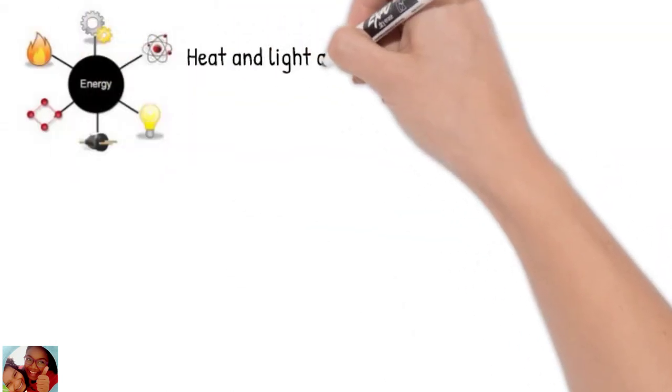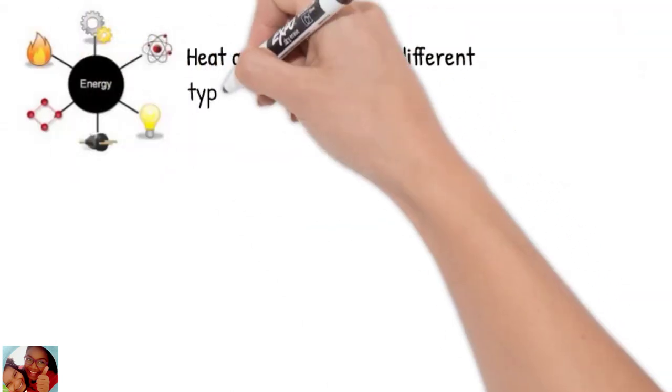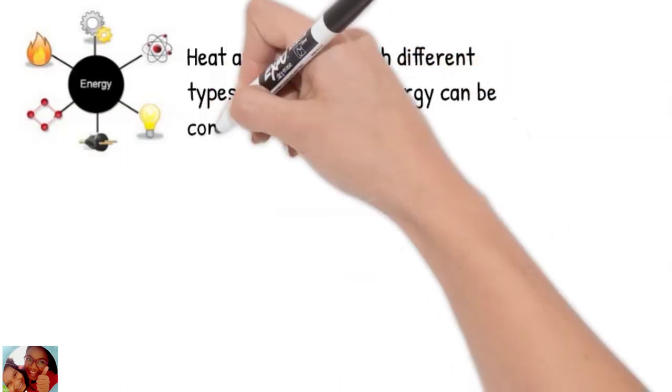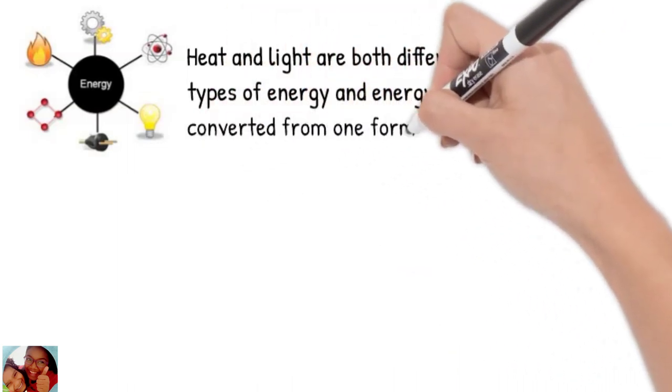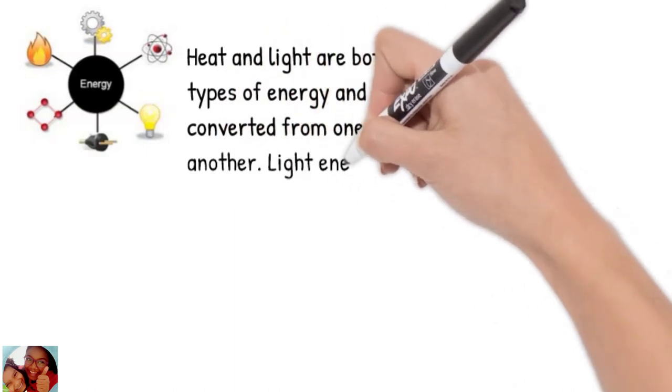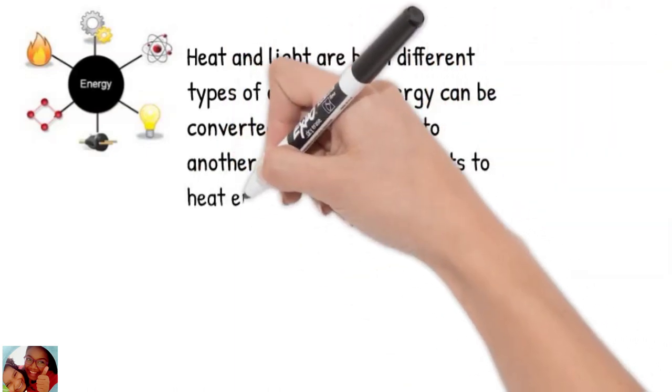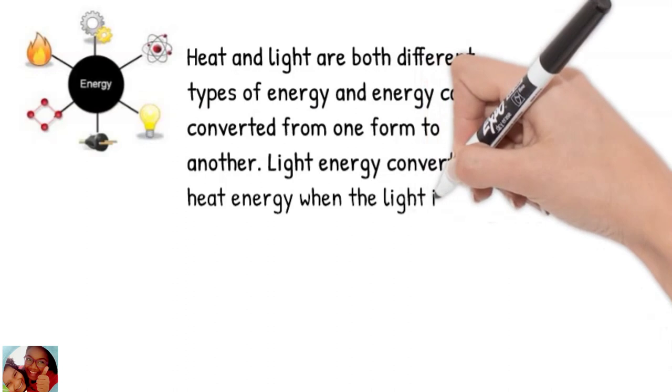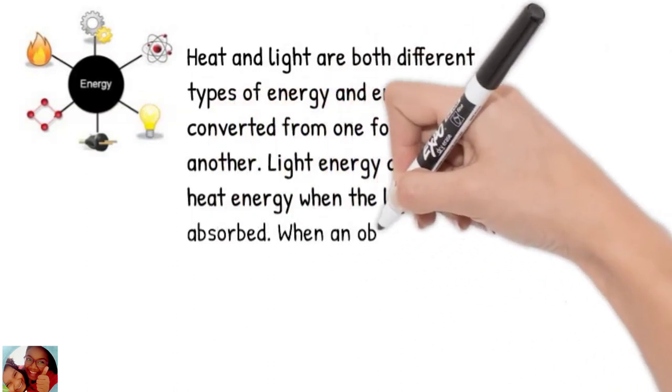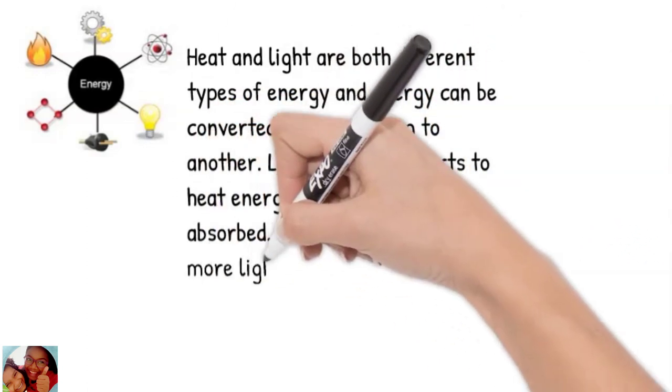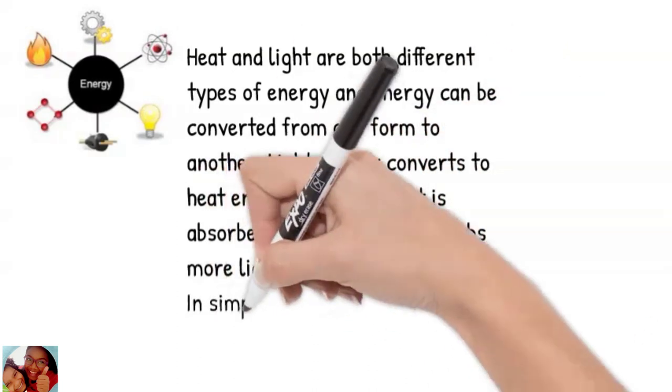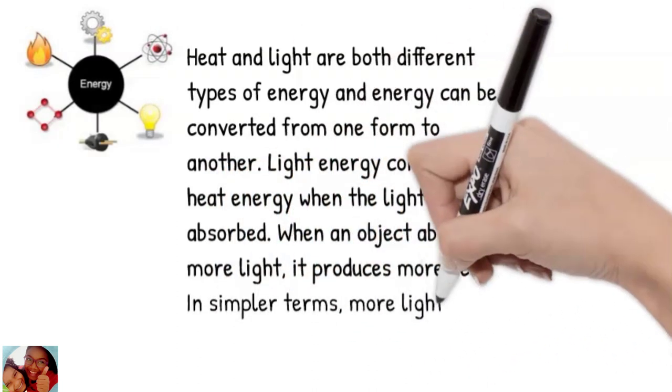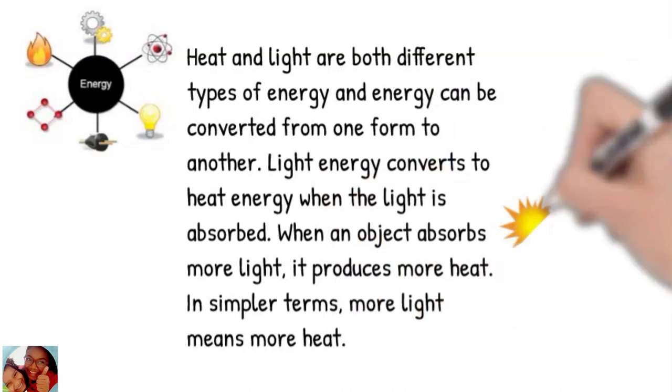Heat and light are both different kinds of energy, and energy can be converted from one form to another. Light energy converts to heat energy when the light is absorbed. When an object absorbs more light, it produces more heat. It's simple - more light means more heat.